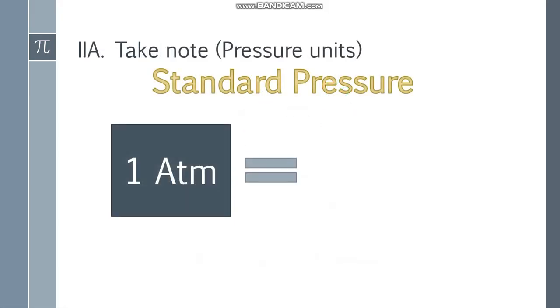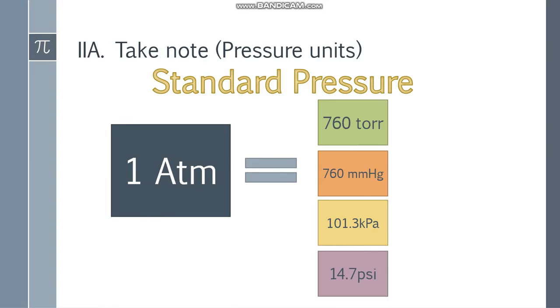Also take note, for pressure units, standard pressure could be 1 atm or atmosphere, 760 torr, 760 mmHg or millimeters of mercury, 101.3 kPa or kilopascal, and 14.7 psi.